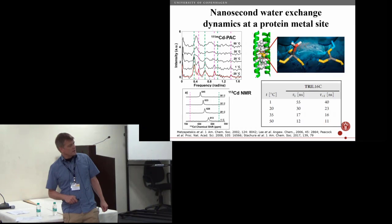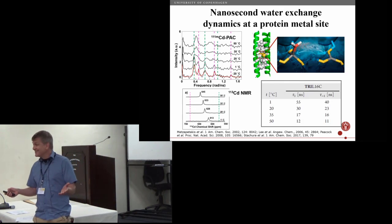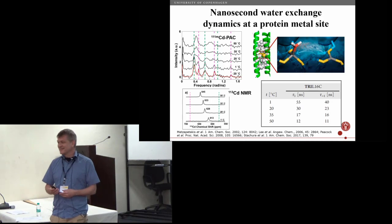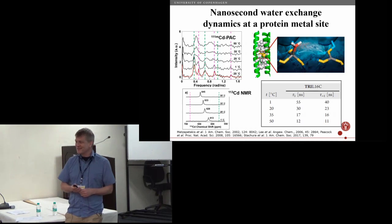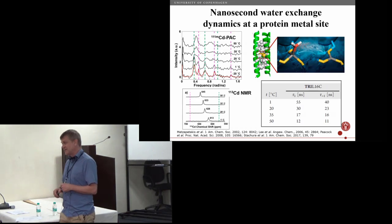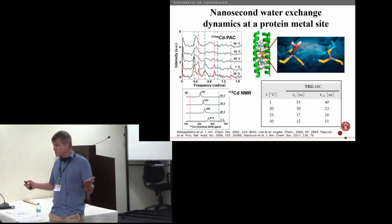Now Vince's group also performed cadmium-113 NMR, and at one degree Celsius you only see one resonance. So initially, well maybe I should ask you why is that? Why do you only see one resonance with NMR and two signals with PAC spectroscopy? It can be a rhetorical question if you wish. It means it's just because NMR is not sensitive to dynamics on the nanosecond time scale, so you see the rapid exchange, the weighted average of the two species.